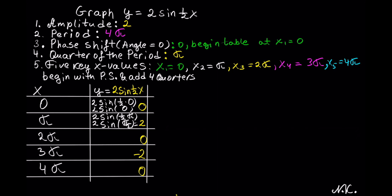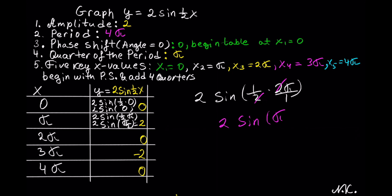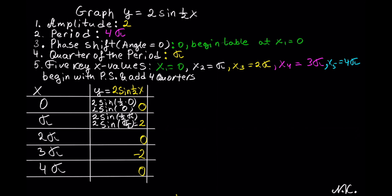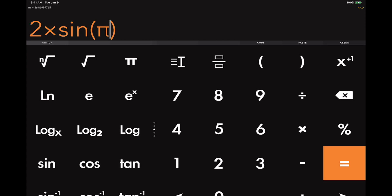The next x value is 2 pi. Substituting: 2 sin of 1 half times 2 pi. We multiply 1 half by 2 pi over 1 — simplifying, 2 goes into 2 one time — and this becomes 2 sin of pi. We have just hit another quadrantal angle of pi radians, which is 180 degrees. So 2 sin of pi equals 0. Let's verify: 2 sin of pi is indeed equal to 0.